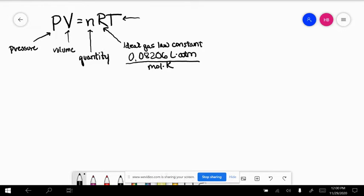The units are very important on the ideal gas law constant because it tells us what units we have to use for the other variables.